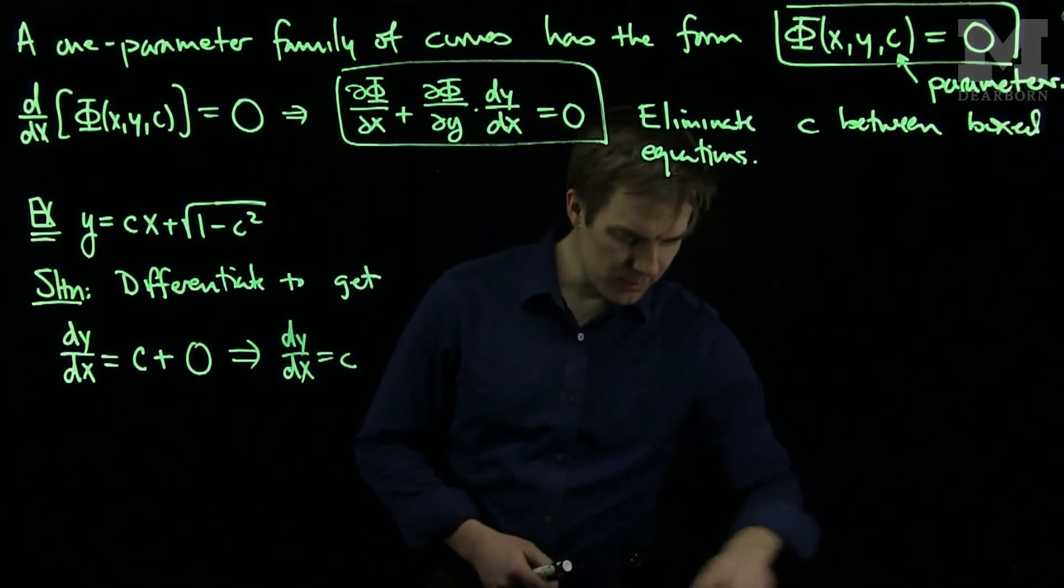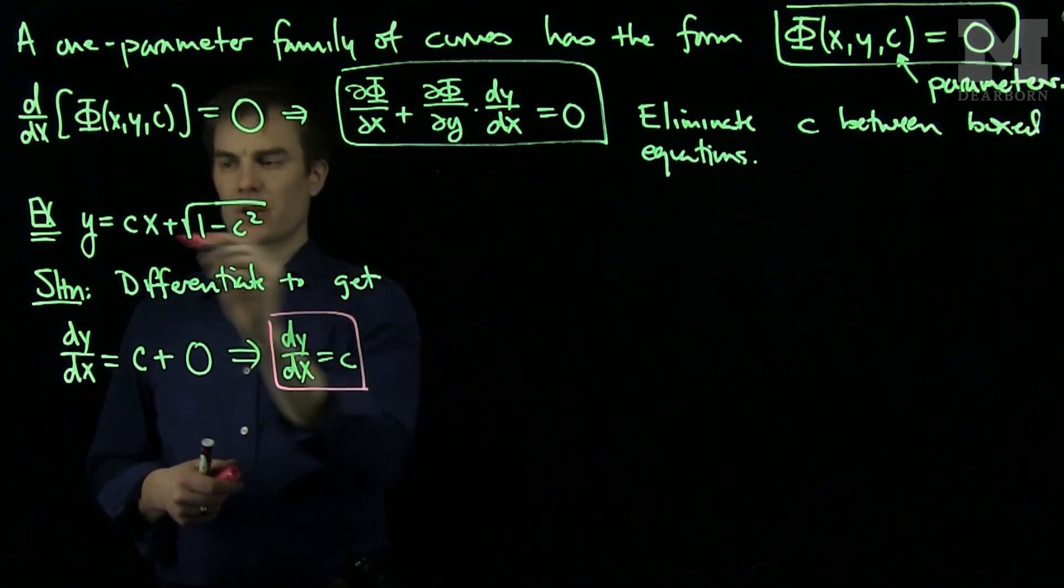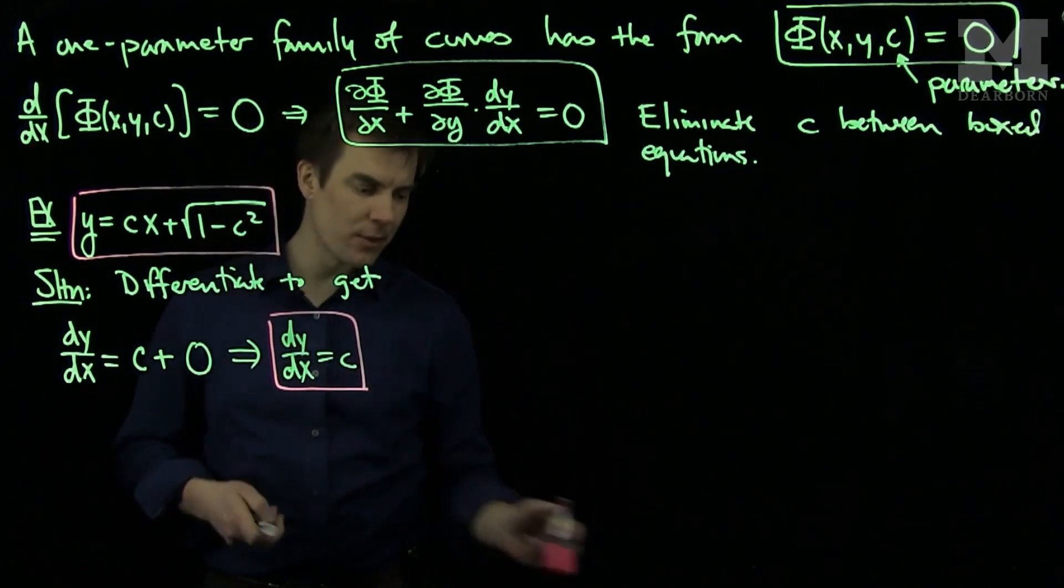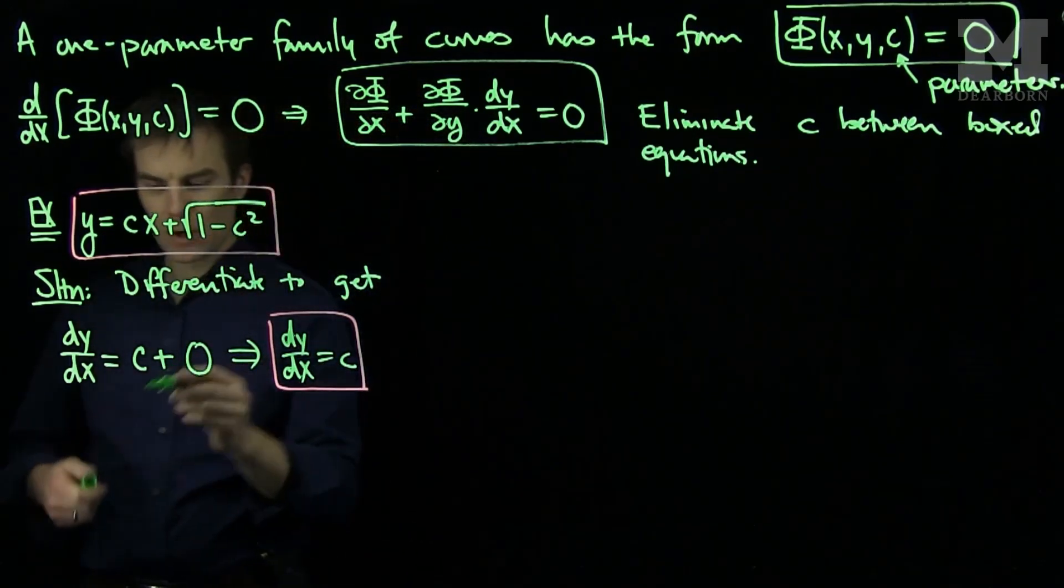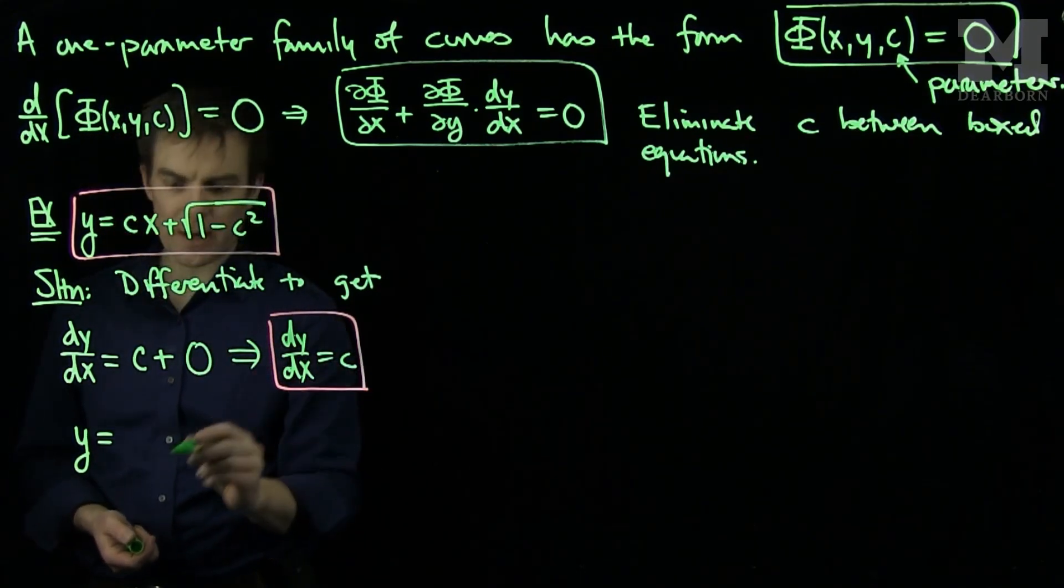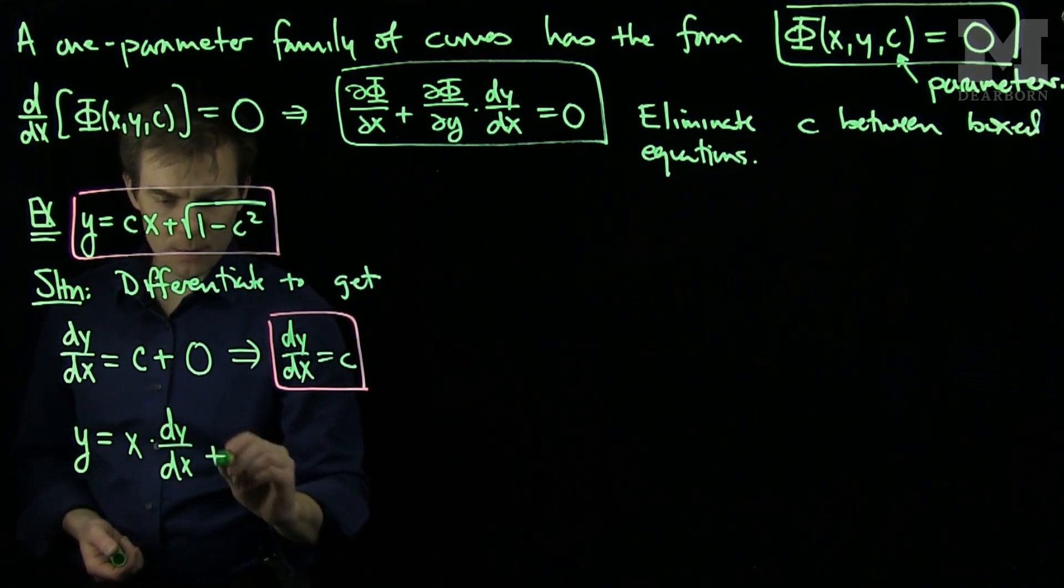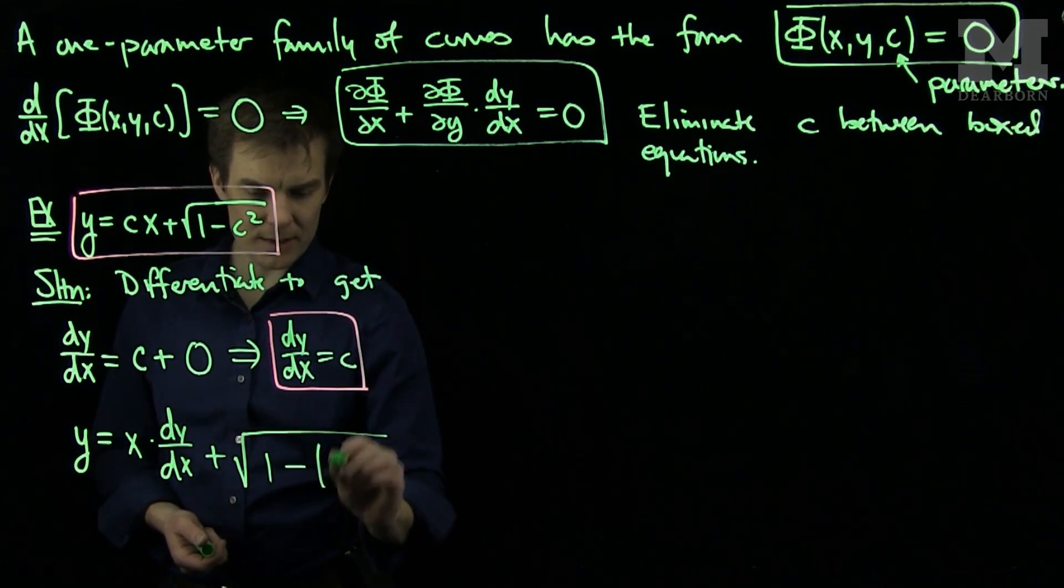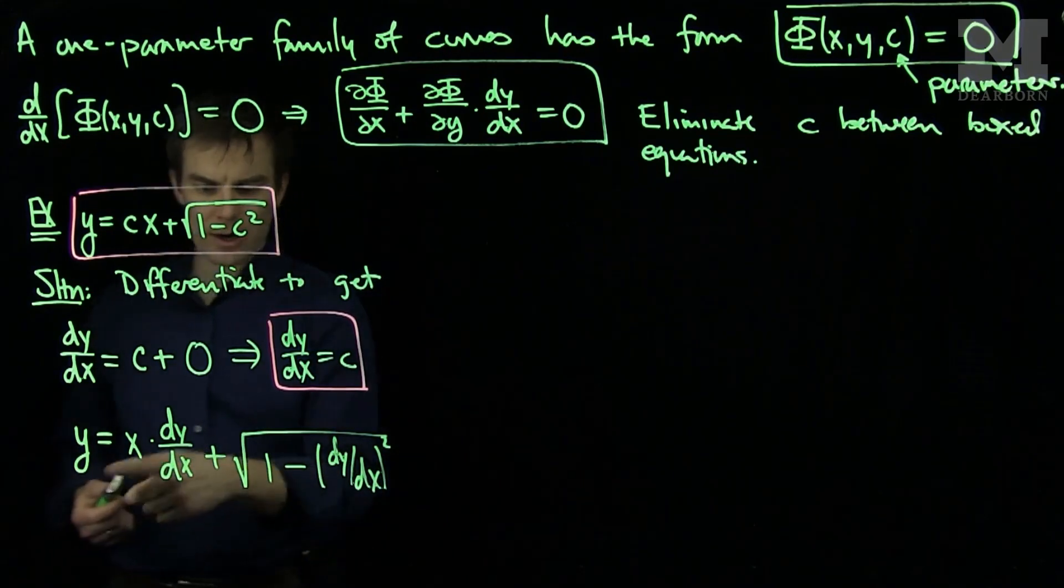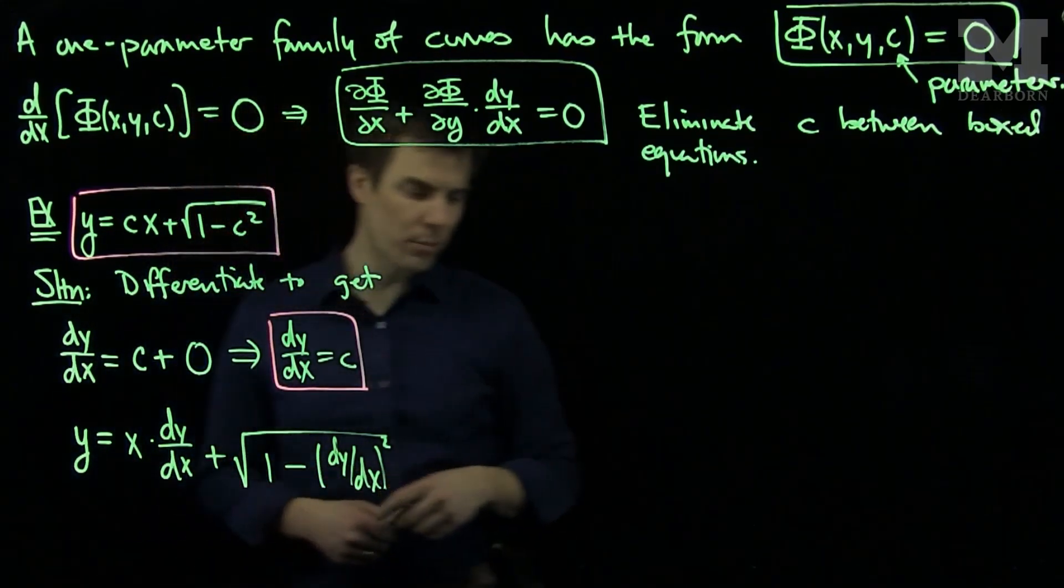We can use this information that dy/dx = c and go back into the original one-parameter family to eliminate c. So y = cx becomes y = x(dy/dx) + √(1 - (dy/dx)²). This is our differential equation with no more c. The solution to this differential equation is the given one-parameter family.